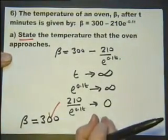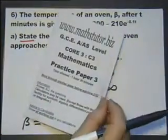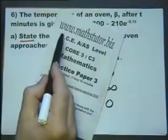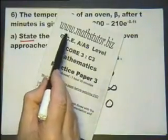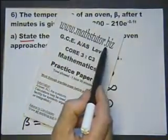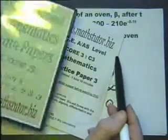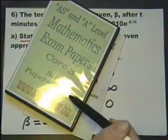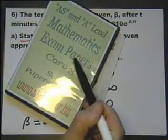Let's get on to part B. If you want to see part B and the rest of this paper, you'll need to go to www.mathstutor.biz and consider buying the set of DVDs and the set of papers for Core 3.